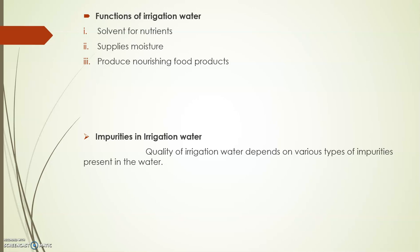The third function is that some salts present in the soil react in the presence of water to produce nourishing food products useful for plants — if there is no water, these nourishing food products cannot be produced. Next, irrigation water cools the soil and atmosphere, making a more favorable environment for healthy plant growth.